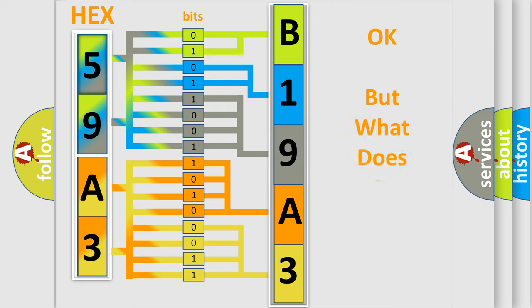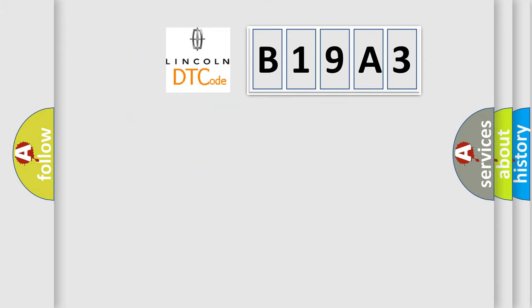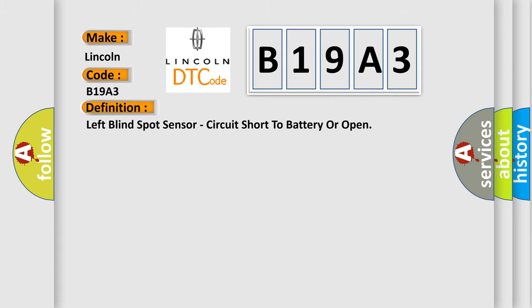The number itself does not make sense to us if we cannot assign information about what it actually expresses. So what does the diagnostic trouble code B19A3 interpret specifically for Lincoln car manufacturers? The basic definition is: Left blind spot sensor, circuit short to battery or open.